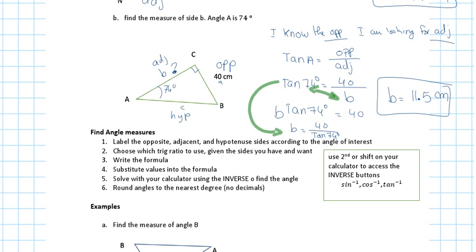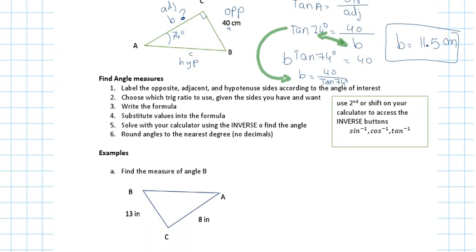To solve for angles, you follow the same steps. The only difference is when solving for angles, you're going to have to find the inverse. Label your opposite, adjacent, and hypotenuse. Choose which trig ratio to use given the sides you have. Write the formula, sub in the values, and then do the inverse operation. Round all angles to the nearest degree — no decimals for angles.